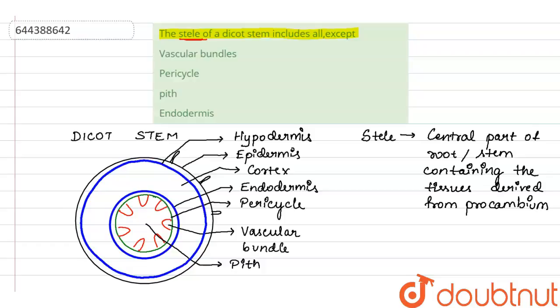So what does it include? This includes vascular tissue, that is xylem and phloem. In some cases it includes pith and pericycle also. This forms the stele.